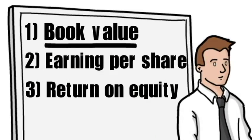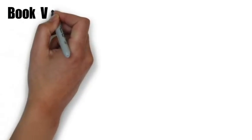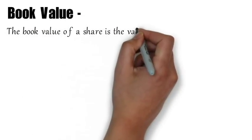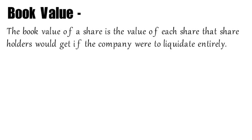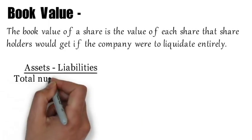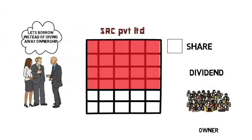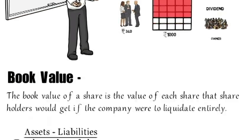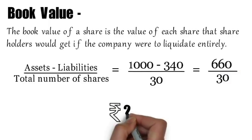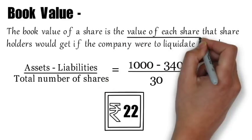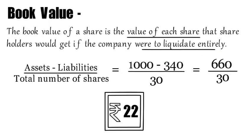Now that we have laid down the basics, let's start by understanding what book value means. The book value of a share is the value of the share that shareholders would get if the company were to liquidate entirely. It is given as: assets minus liabilities, divided by the total number of shares. For example, if the company has total assets worth Rs.1000, liabilities worth Rs.340, and 30 total shares, then the book value is (1000 − 340) ÷ 30 = 660 ÷ 30 = Rs.22. Rs.22 is the value each shareholder would receive if the company were to shut down today.